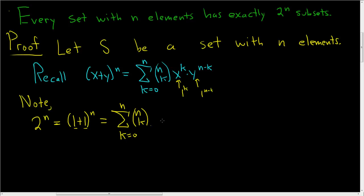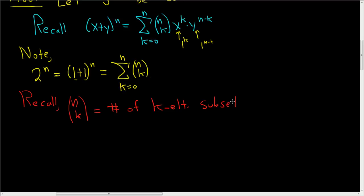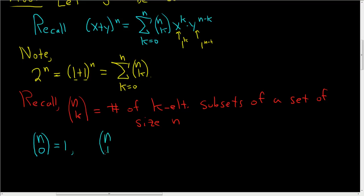So what is n choose k? Recall, n choose k is the number of k-element subsets of a set of size n. For example, n choose 0 is the number of 0-element subsets of a set of size n — that's going to be 1, because there's only one subset that has no elements: the empty set. And n choose 1 is the number of 1-element subsets of a set of size n.